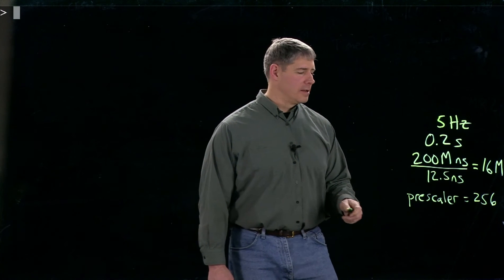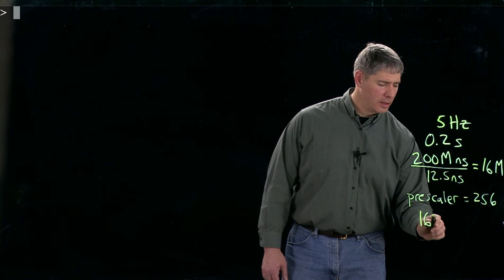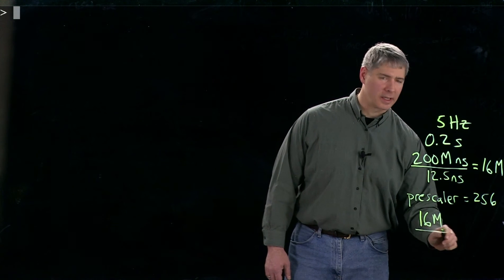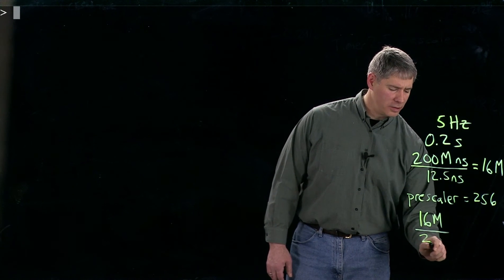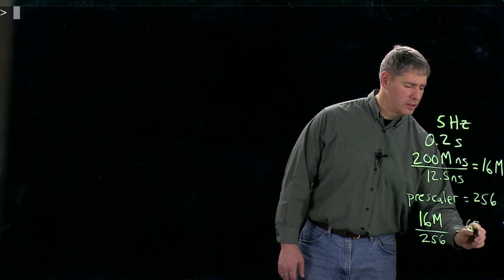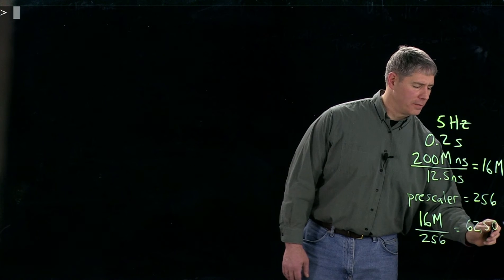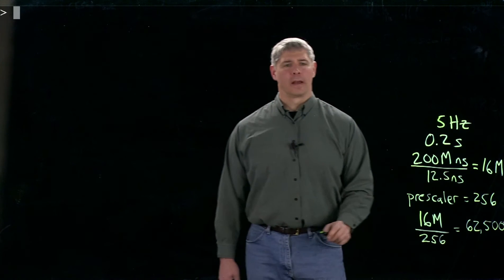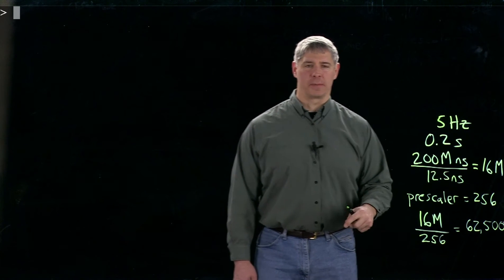pulses. So now if we take 16 million peripheral bus clock ticks, divide by 256, then we get 62,500. And 256 was a good choice because our